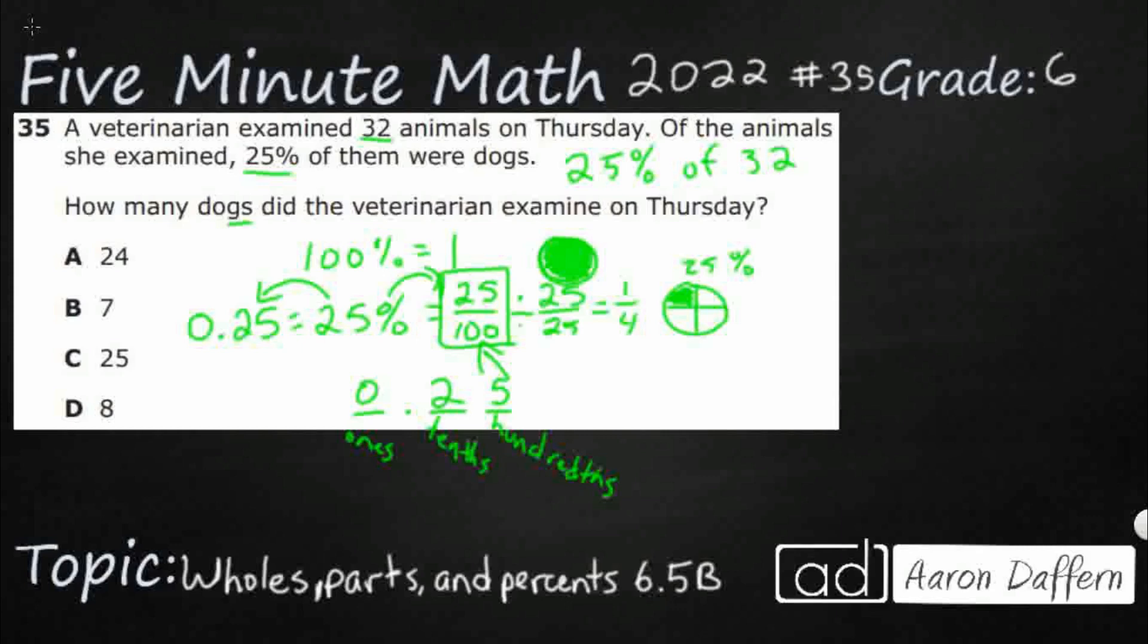So if I want to find 25% of 32, well, that's a multiplication problem. And instead of multiplying by a percent, which is kind of weird, I can multiply by a decimal. 0.25 times 32. So let's do that.